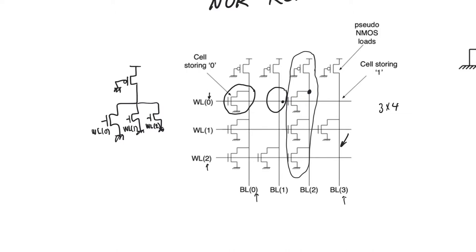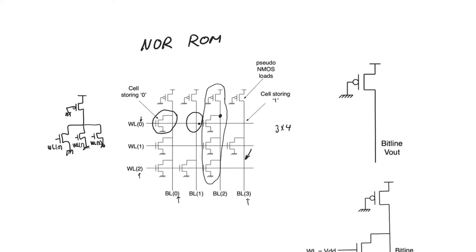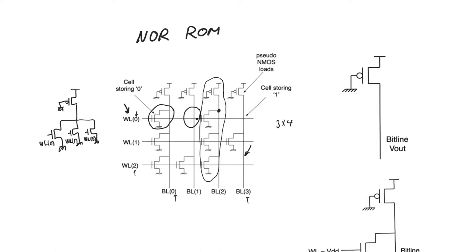To read from a NOR ROM, the process consists of first activating a single word line and then observing the values that appear on the bit lines. Assuming we activate word line zero, we put a 1 on that word line and zeros on all others. The block that performs this operation is called a row decoder — a k×2^k block that activates only a single line of the 2^k lines indexed by the k-bit address.